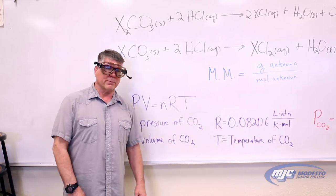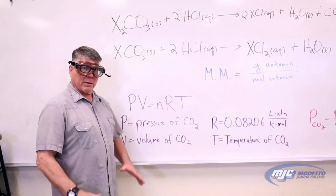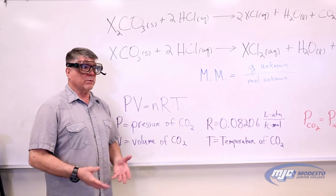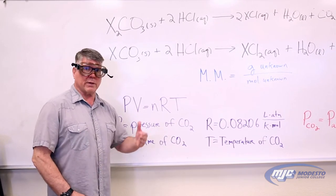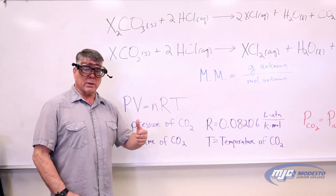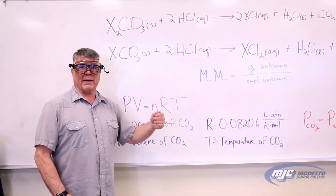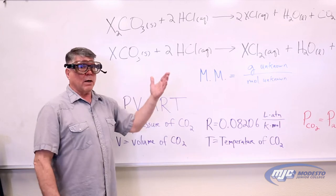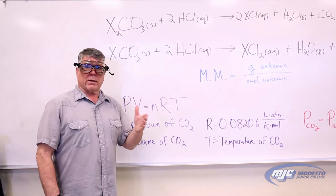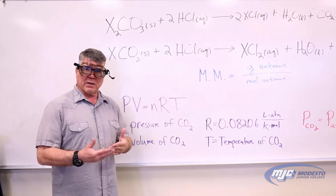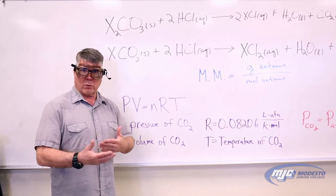Ideal gas law for short. So the idea is this: what's an unknown carbonate? Well, carbonate means that it's an ionic compound and the anion is carbonate, CO₃²⁻. What's unknown about it is the molar mass, because different cations give it different molar masses.